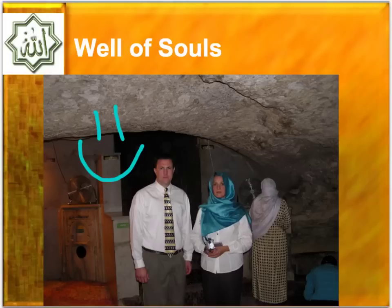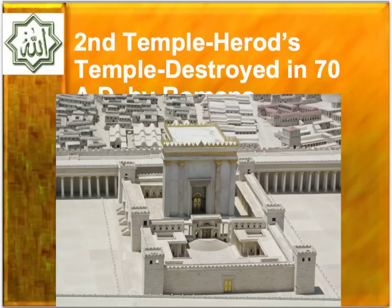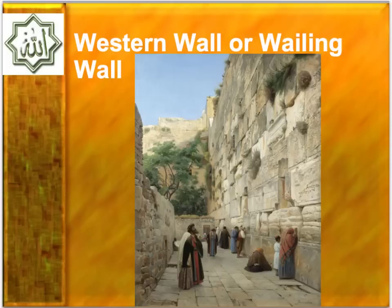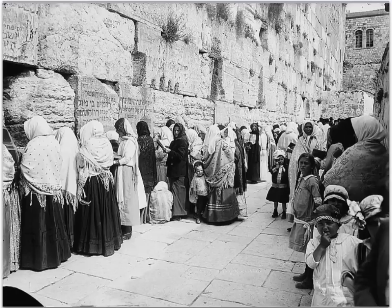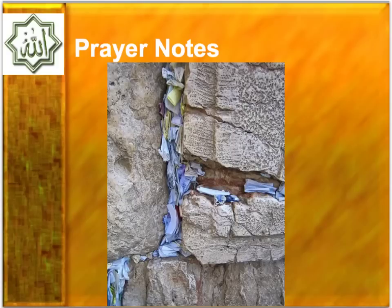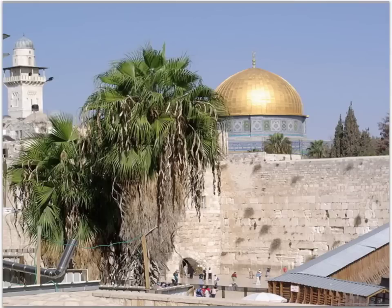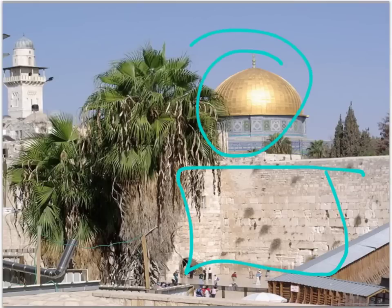In Muslim belief, at the end of time you can hear the voices of the dead in the Well of Souls, and the Kaaba is going to come and be placed back on top of the rock. The second temple was destroyed by the Babylonians, then again in 70 A.D. by the Romans — what's known as Herod's Temple. Only one part remains: the Wailing Wall, or Western Wall. Jews go and pray at the Western Wall, which is the remains of the temple. It's traditional to put a prayer note inside the wall. The Dome of the Rock and the Western Wall are right next to each other in Jerusalem — a split city — with both Islam and Judaism being important religions there today.